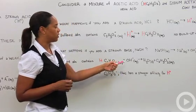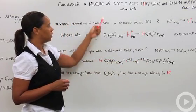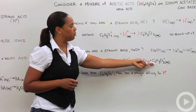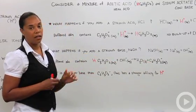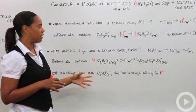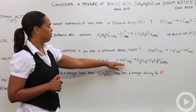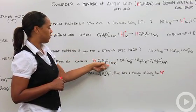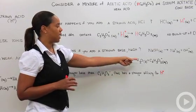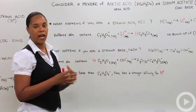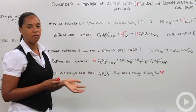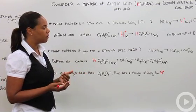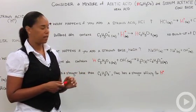Again we still have the basic makeup of our initial solution. Here we've got some water and then we've got acetate ion lying around. When we dumped in the strong base, the hydroxide ions remove the proton from the acetic acid to make the acetate conjugate base. And again our solution has not taken any appreciable changes in its pH.